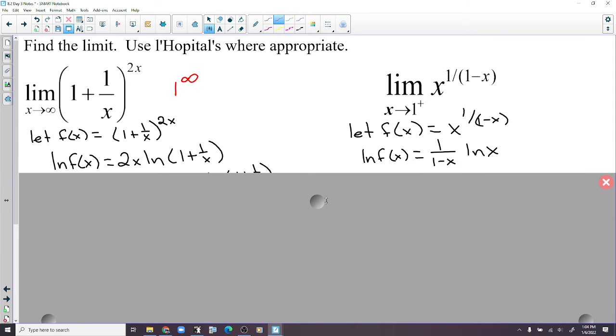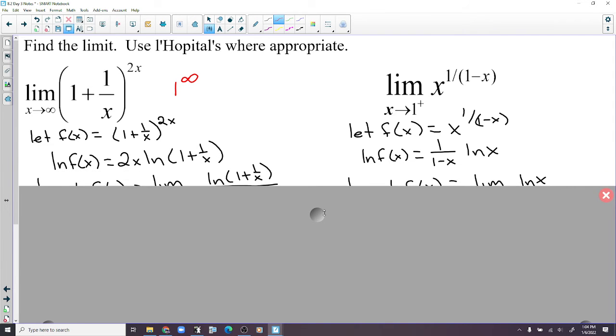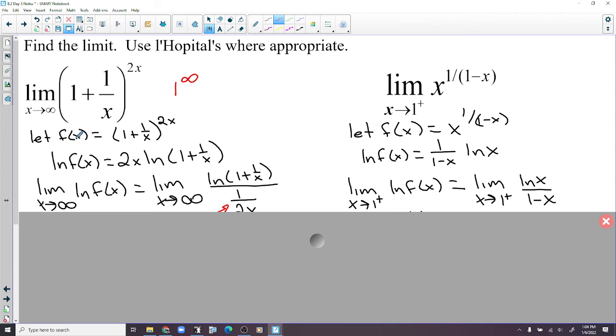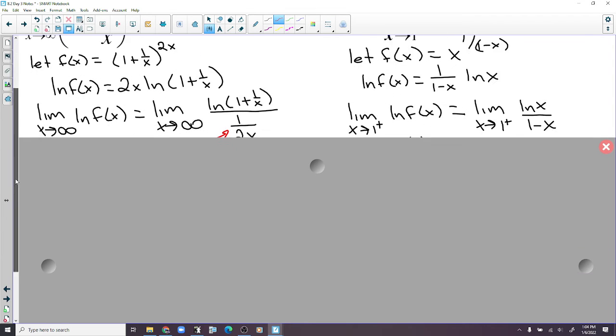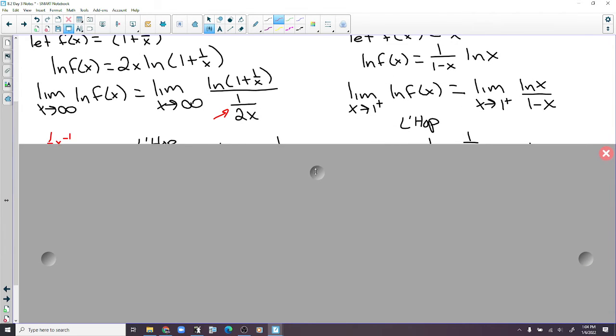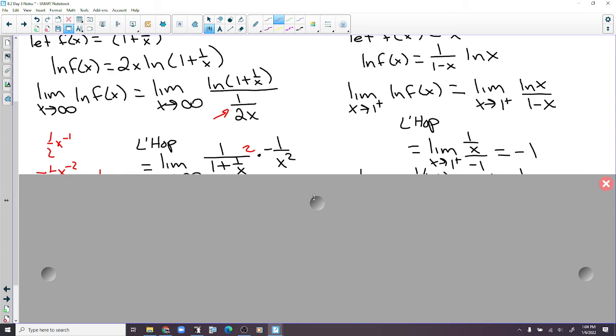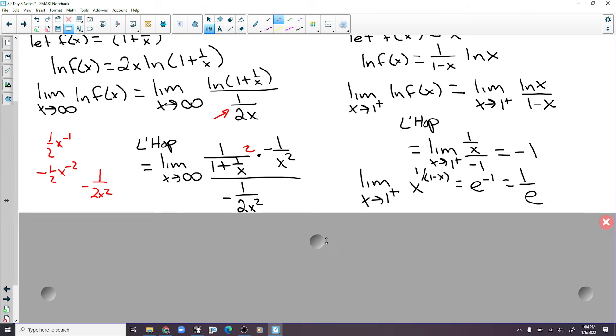Let f of x equal the function, take the natural log. We bring the 1 over 1 minus x down. Now we kind of have that natural fraction created. Throw in the limit. Take the derivative. The derivative, there's 1 over x, that's negative 1. So it ends up being negative 1 over x. But when we plug 1 in, we just get negative 1. E to the negative 1, which can be written as 1 over e.